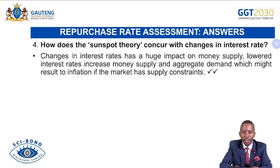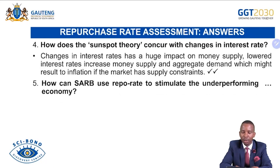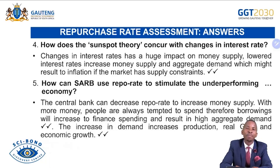'How does the Sunspot Theory concur with changes in interest rates?' Changes in interest rates have a huge impact on money supply — lowered interest rates increase money supply and aggregate demand, which might result in inflation if the market has supply constraints. 'How can the South African Reserve Bank use the repo rate to stimulate an underperforming economy?' The central bank can decrease the repo rate to increase money supply. With more money supply, people are tempted to spend, so borrowings increase, financing spending and resulting in high aggregate demand. The increase in demand increases production, real GDP, and economic growth.